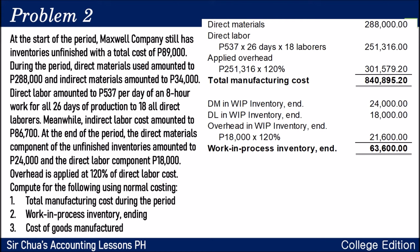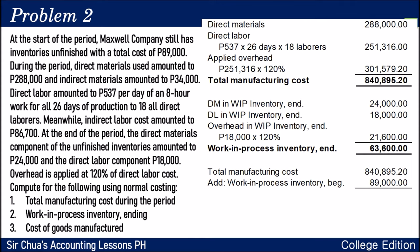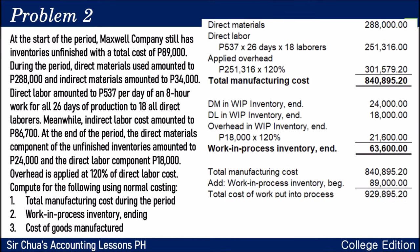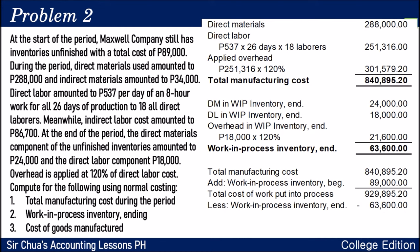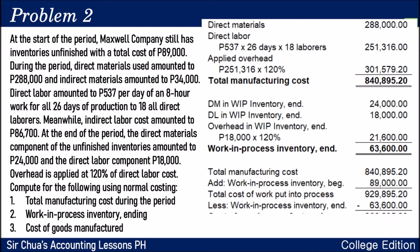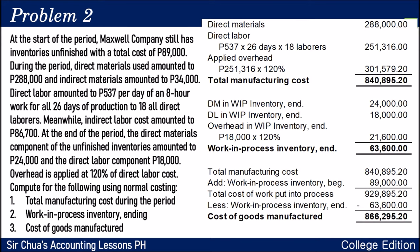Question number three: the cost of goods manufactured under normal costing. We start with total manufacturing cost of $840,895.20, add beginning work in process inventory of $89,000 — which was described as the unfinished inventory at the start of the period — for a total cost of work put into process of $929,895.20. Deduct ending work in process inventory of $63,600. Cost of goods manufactured is $866,295.20.